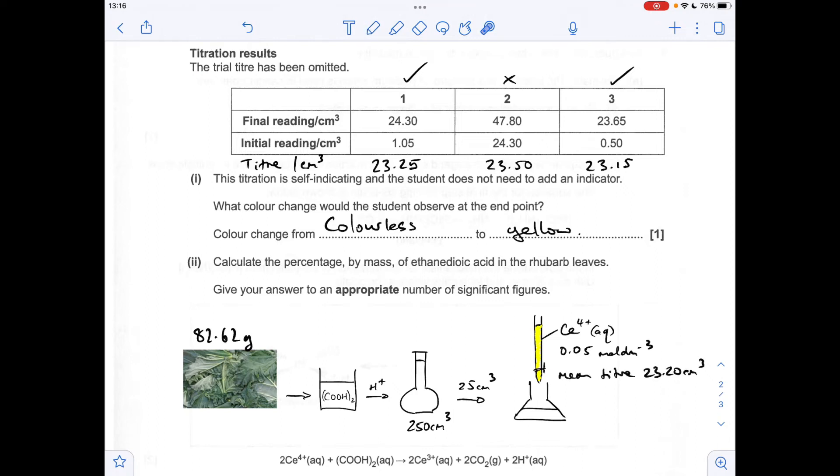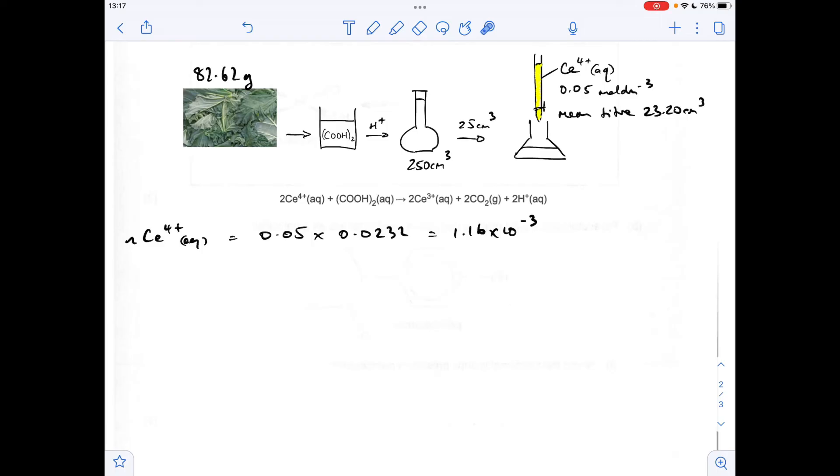So for the first part of the calculation, I'm going to work out the moles of Ce4+: concentration times volume. So that mean titre in decimetres cubed. So that's coming out at 1.16 times 10 to the minus 3. The moles of the ethanedioic acid is going to be half as much. So that's coming out at 5.80 times 10 to the minus 4.